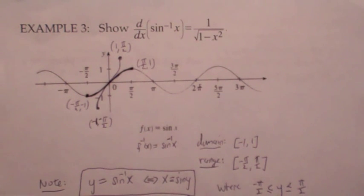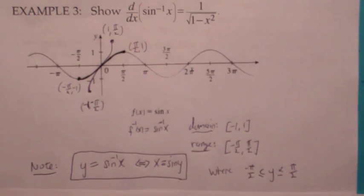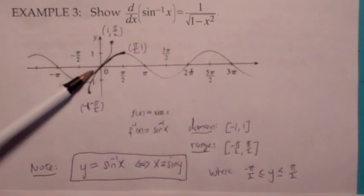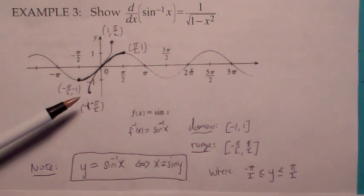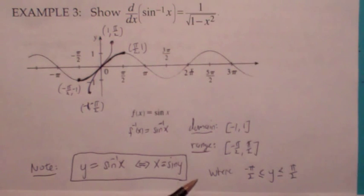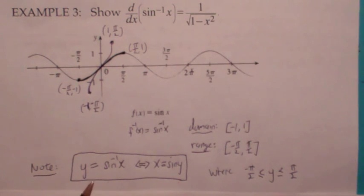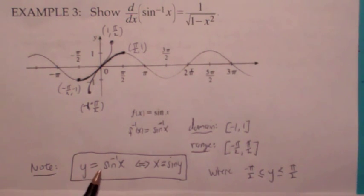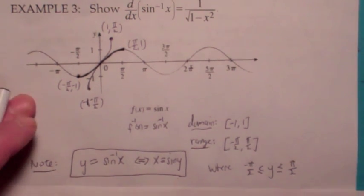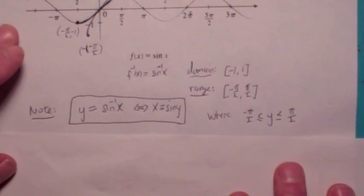Recall how we define the inverse sine: we restrict the sine function and then switch x and y. The domain of inverse sine is [−1, 1] and the range is [−π/2, π/2]. So y = arcsin(x) means the same thing as x = sin(y). This is the definition of any inverse function. Note that since y is the inverse sine of x, y is always between −π/2 and π/2.